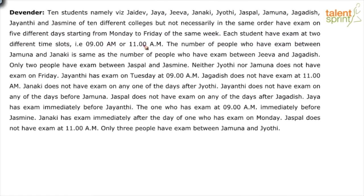If you try to understand the structure: there are 10 students but only five days Monday to Friday and two time slots, so five days times two slots per day gives a total of 10 slots. We have to figure out which person has their exam in which slot — Monday 9am, Monday 11am, Tuesday 9am, Tuesday 11am and so on. The first clue: the number of people who have exam between Jamuna and Janaki is same as the number of people who have exam between Jeeva and Jagdish.